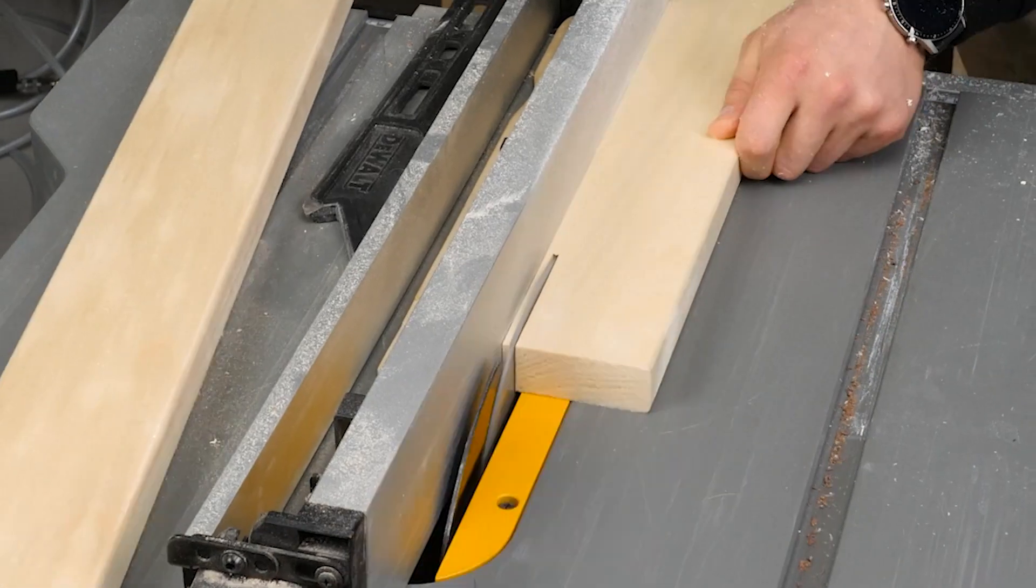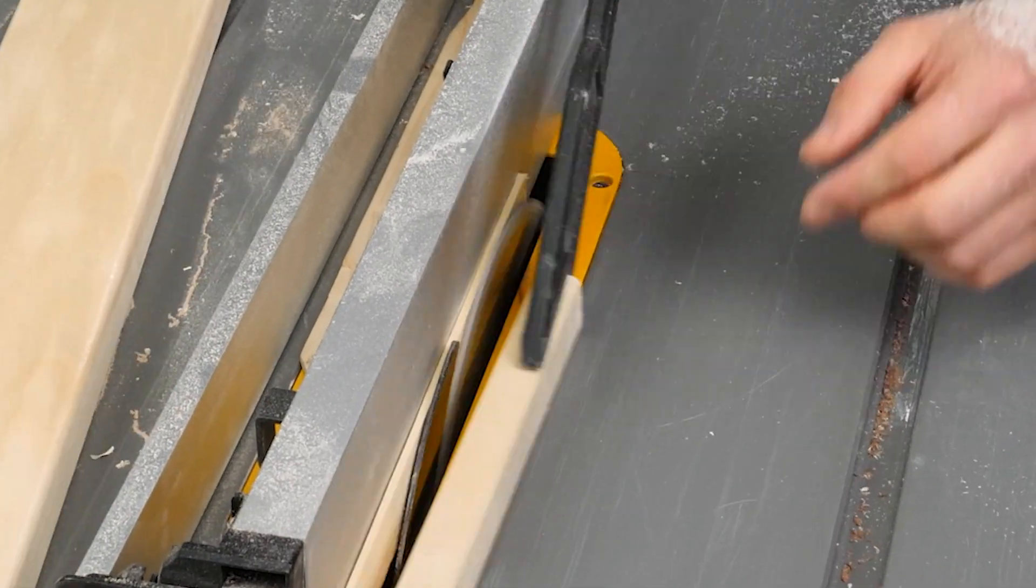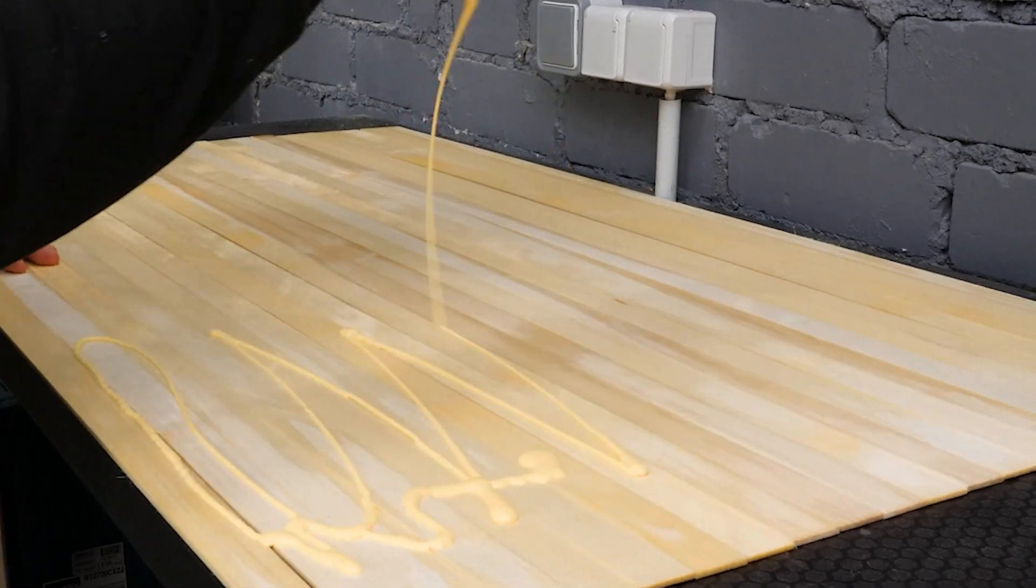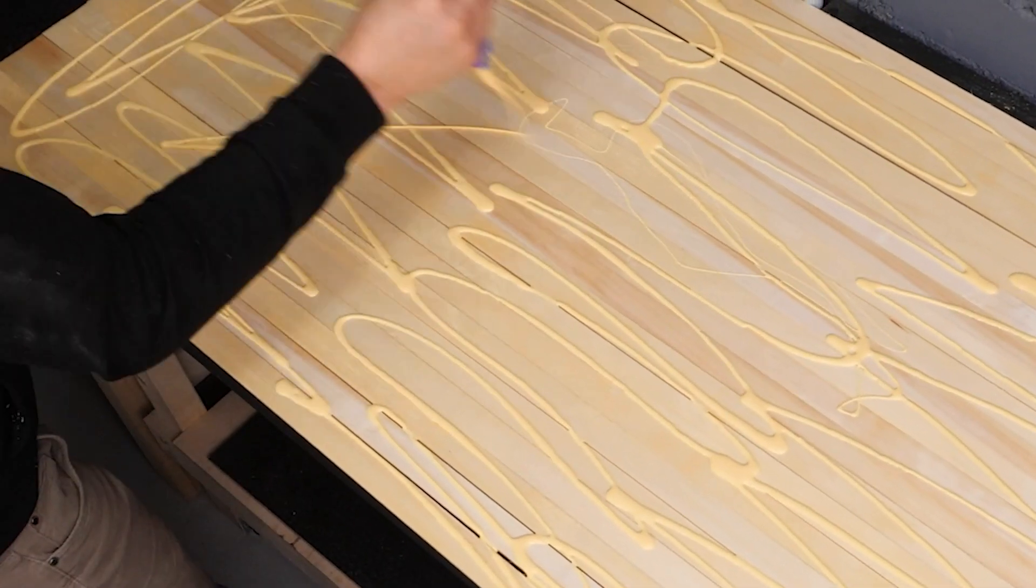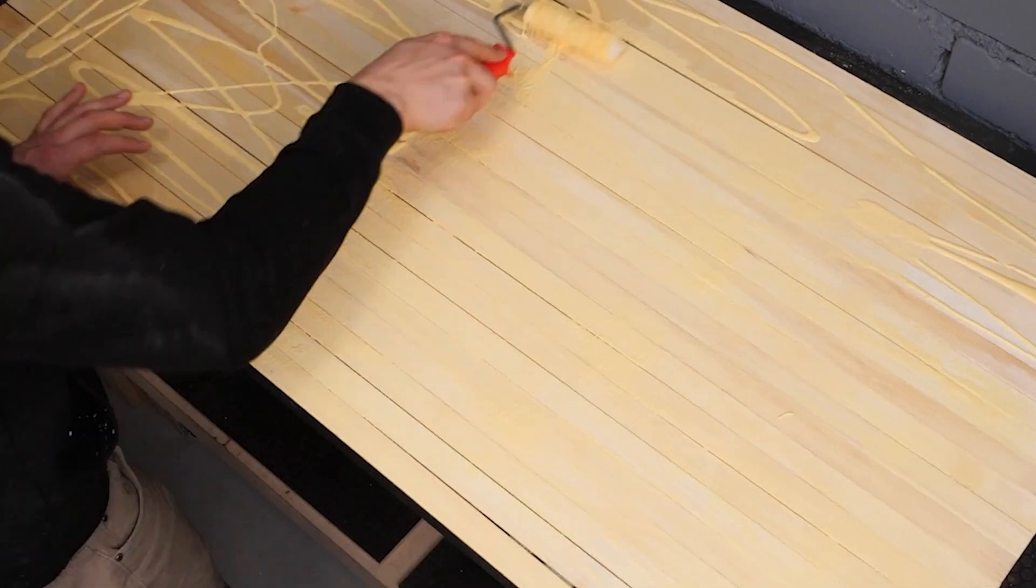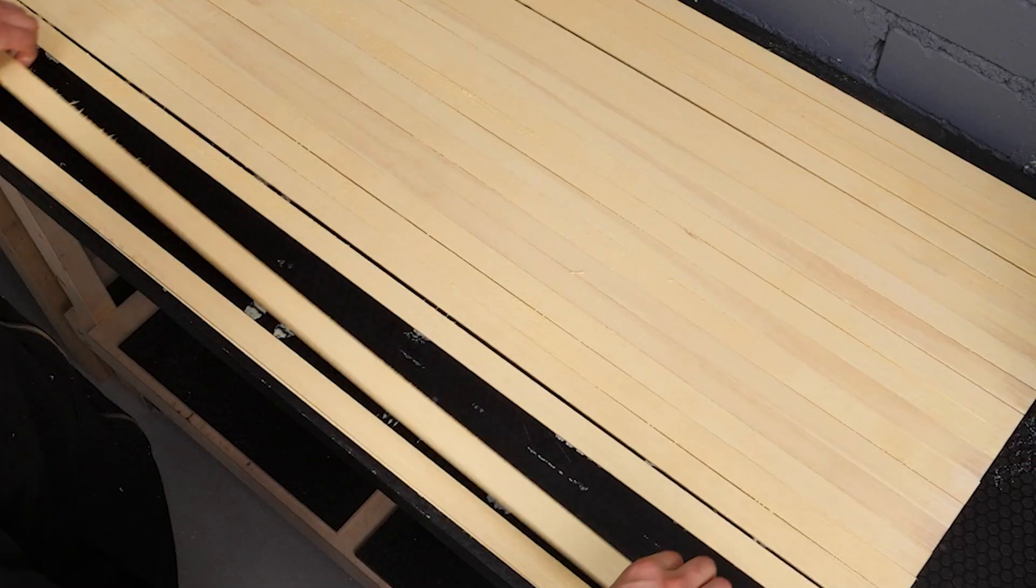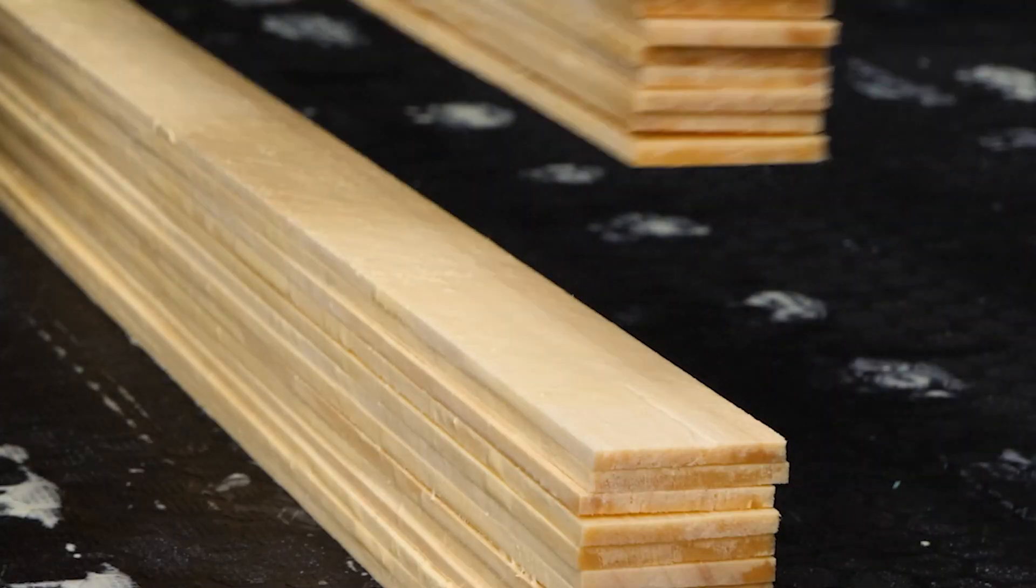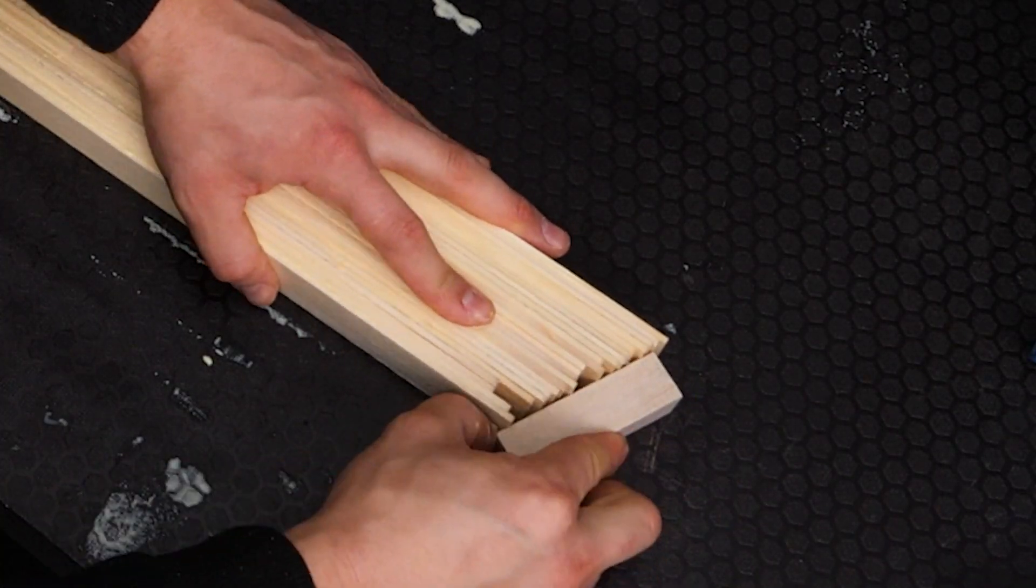Now I've got this solid wooden bar and I'm going to cut it into thin strips. After spreading some glue and sticking them together, I've got a flexible material to work with.